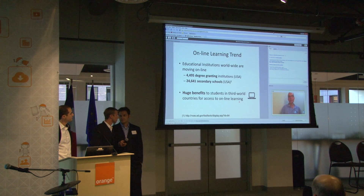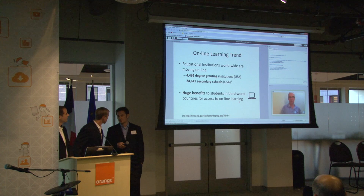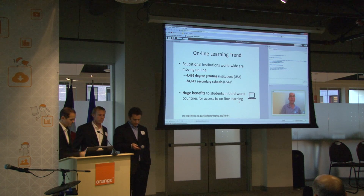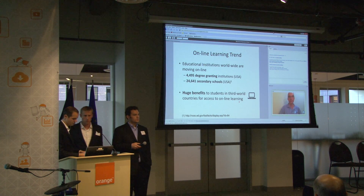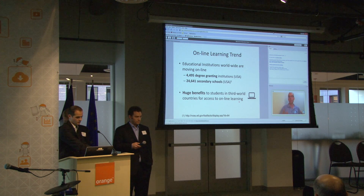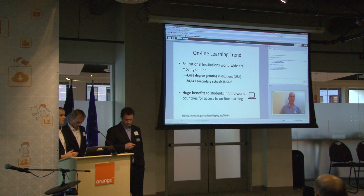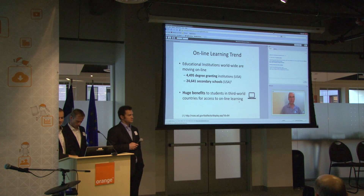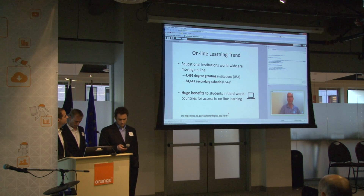There is a huge trend toward online learning for educational institutions. In the United States, there are about 4,500 degree-granting institutions and about 25,000 secondary schools — more worldwide. There are huge benefits for schools and institutions to teach students online, but there are even greater benefits for the students themselves, especially those in the third world who may not have access to high quality learning locally, but could if they could do it online.